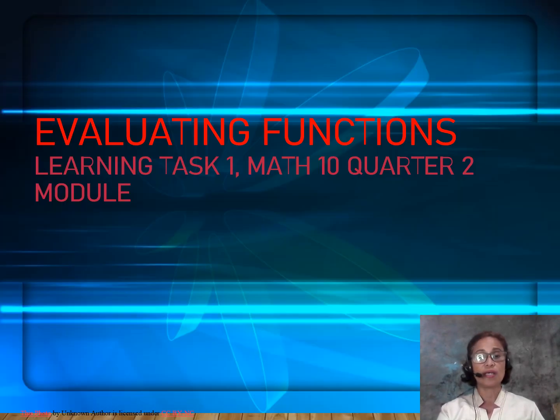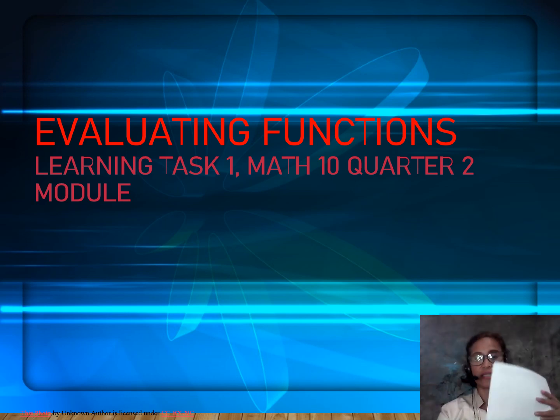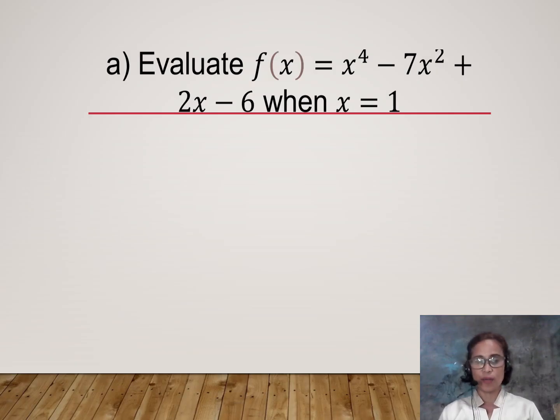Let's start with evaluating these functions using our Mathematics module. Let us now evaluate the first question: f(x) = x^4 - 7x^2 + 2x - 6 when x = 1. This simply means that all your x variables, you have to substitute with the value 1.